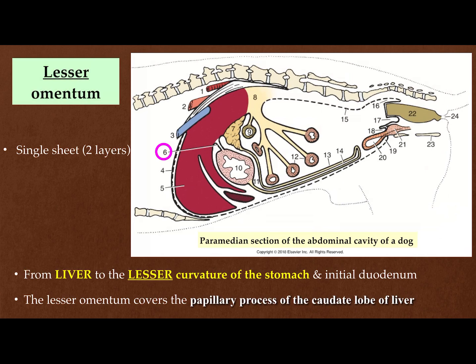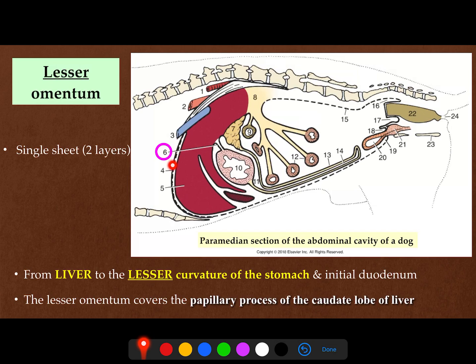Here is the liver, covered by the dotted line representing the parietal peritoneum, and here is the stomach. Here is the lesser omentum between the liver and the stomach — the hepatogastric, number six. From the greater curvature we will have the greater omentum, which starts here and goes all the way down to the urinary bladder. Then the greater omentum reflects upon itself and goes back cranially and upward.